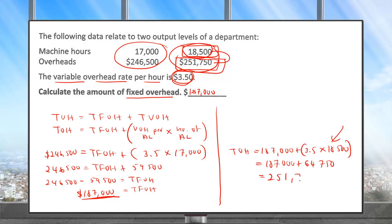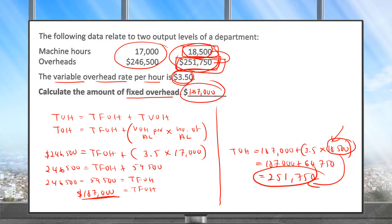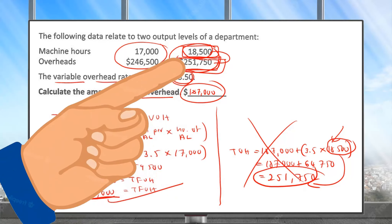3.5 into 18,500 gives 64,750. So 187,000 plus 64,750 equals 251,750. When machine hours are 18,500, the total overhead is 251,750 — which matches. The calculation is 100% correct. The answer for this question is $187,000. Click the linked video to try more questions.